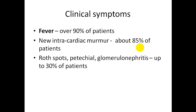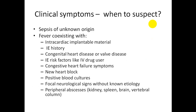Fever is common in about 90% of patients, and new intracardiac murmur in about 85%. Roth spots, petechial hemorrhages, and glomerulonephritis as immunological complications occur in up to 30% of patients. Suspect infective endocarditis when a patient has fever with sepsis or pyrexia of unknown origin, or fever co-existent with intracardiac implantable material, prosthetic valve, history of infective endocarditis, congenital or valvular heart disease, IV drug use, congestive heart failure, new heart block, positive blood culture, focal neurological signs, or peripheral abscesses in kidney, spleen, brain, or vertebral column.